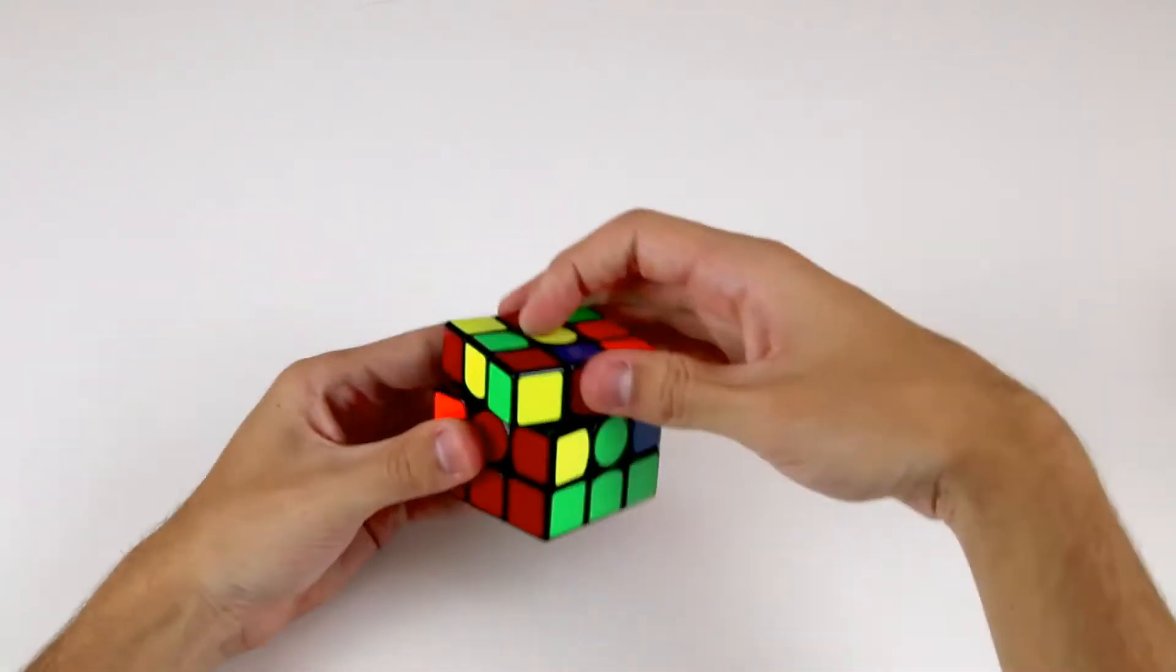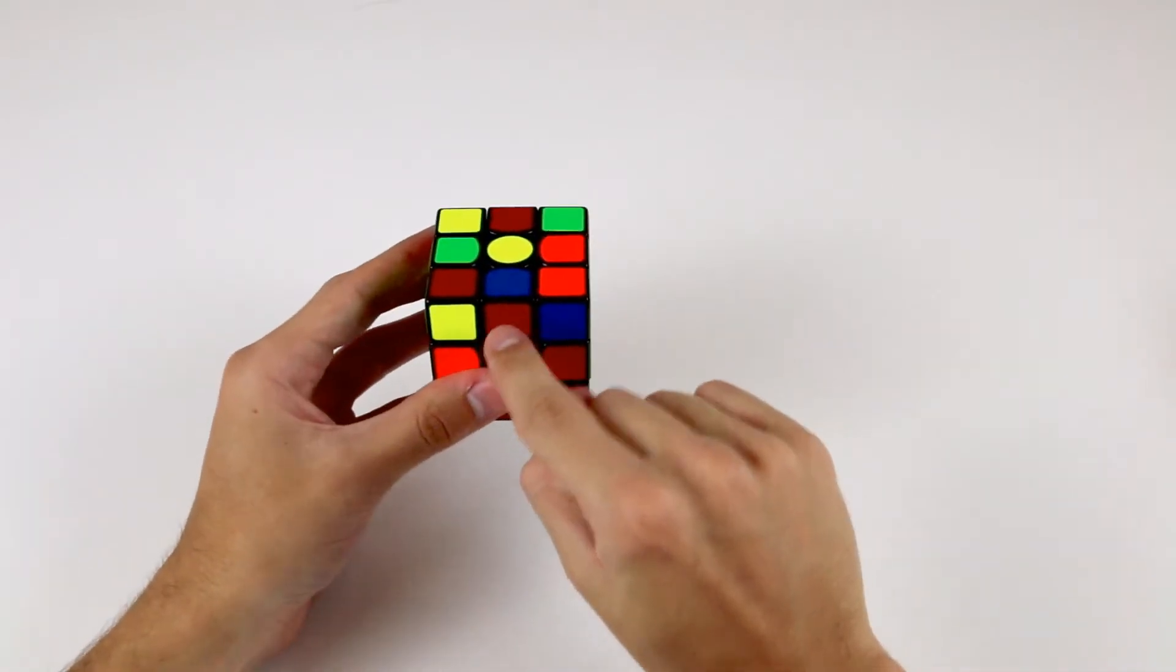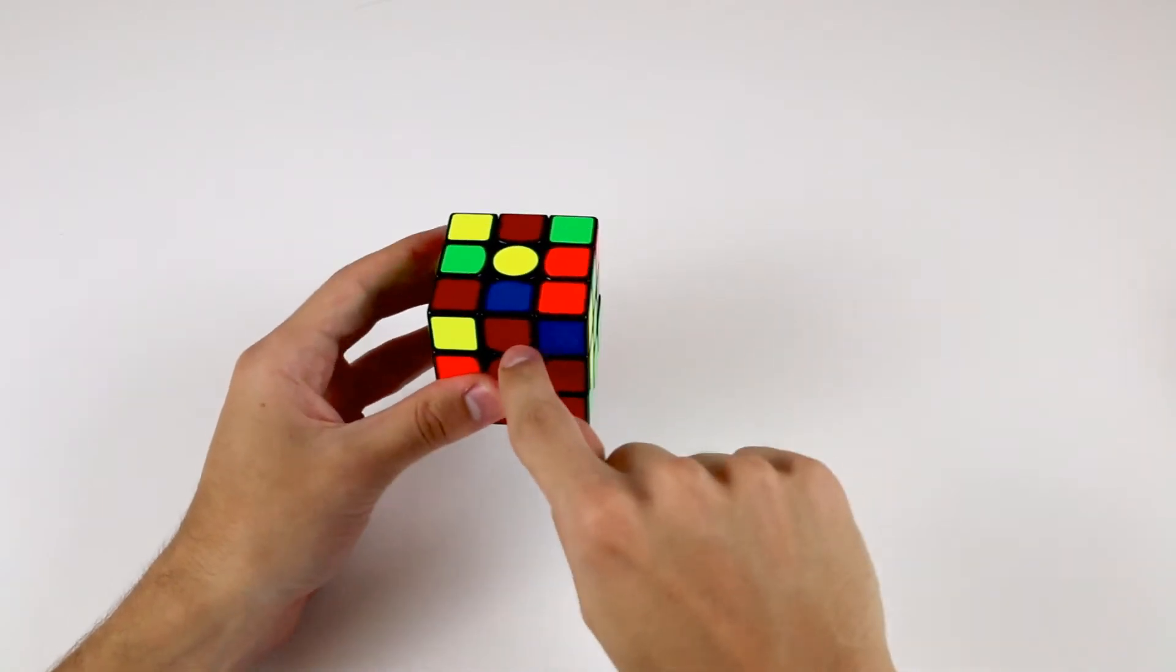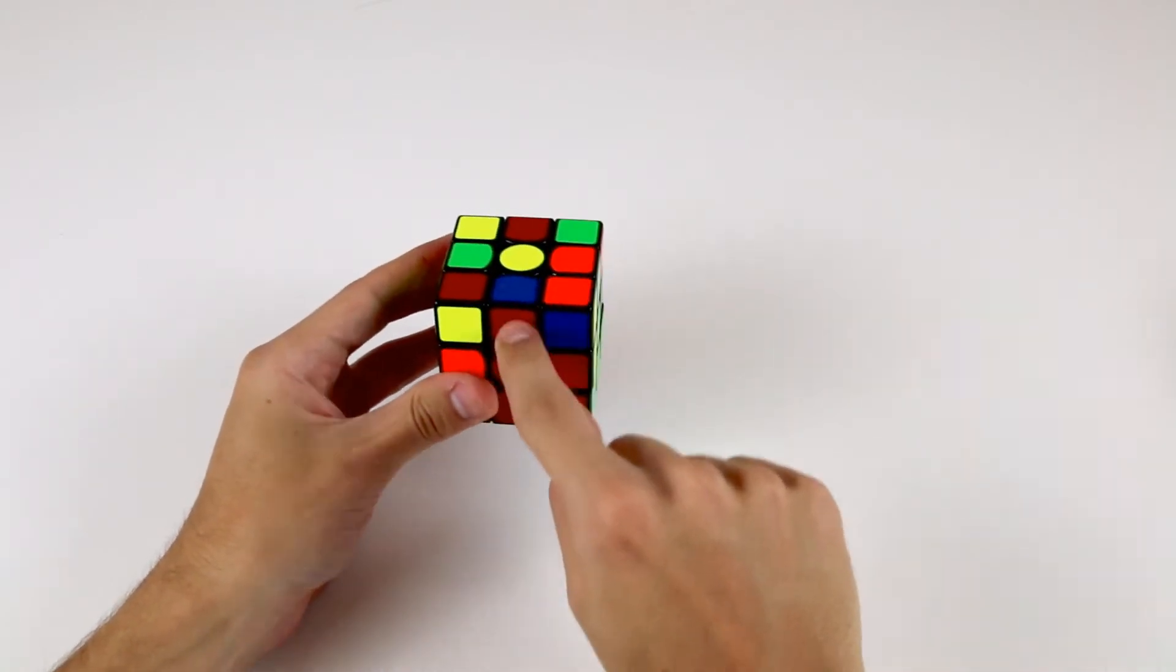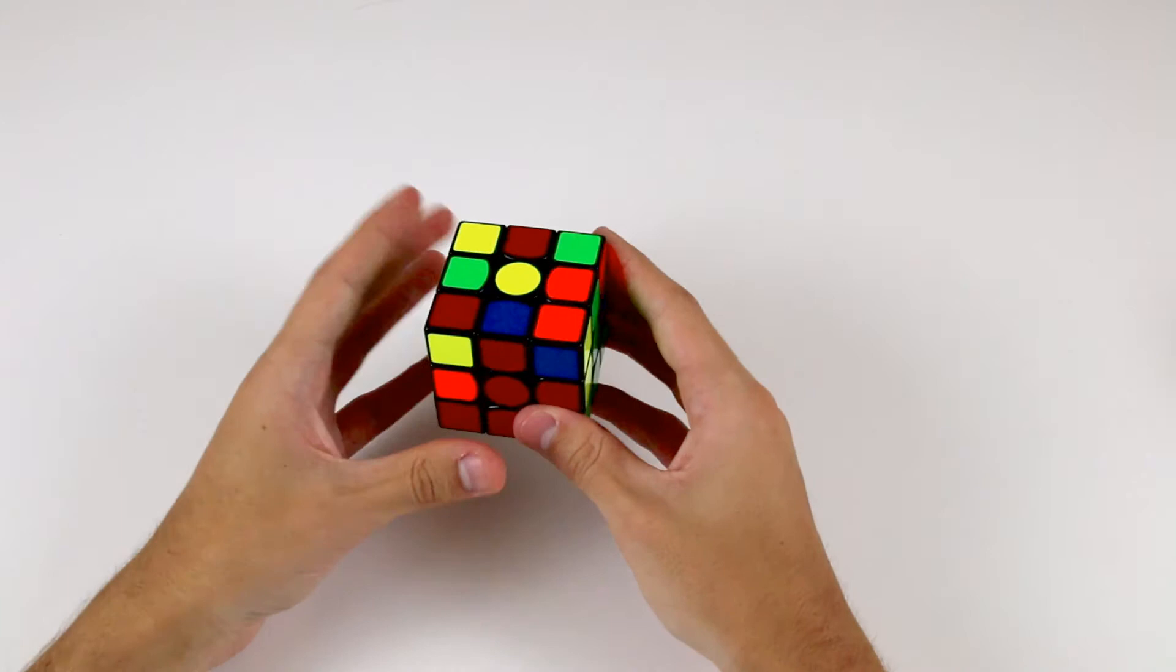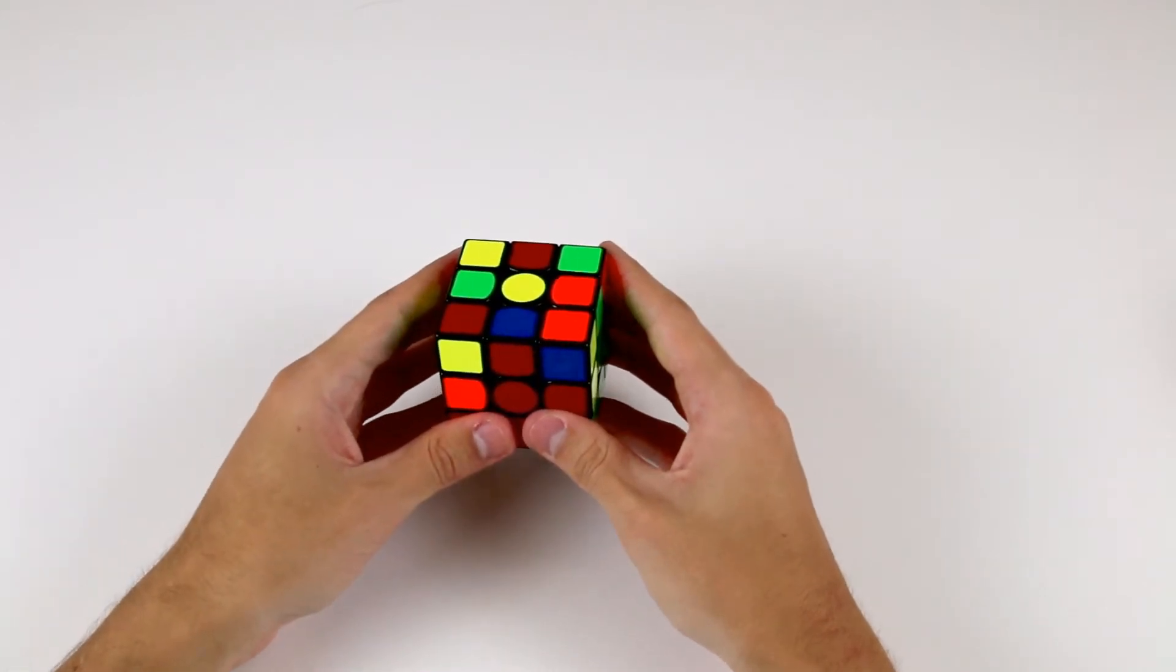What you need to do is rotate the top layer to make sure that the sticker facing outwards, in this case the red sticker, is aligned with the red center. From here, you'll have either one of two cases.